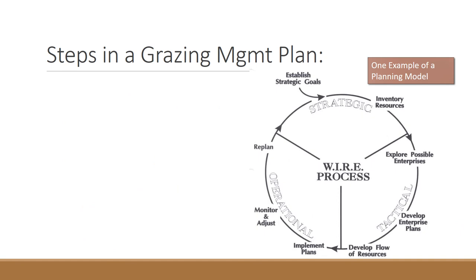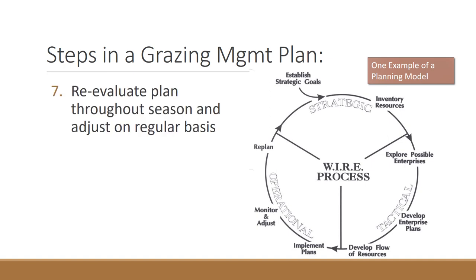Finally, once you've established goals, know your resources, explored possible enterprises, and developed the grazing plan — the tactical side — make sure you have the resources needed to implement that plan, then monitor and adjust: is the plan working? Replan if it's not. The last step in any grazing management plan is to reevaluate from season to season, every year, before, during, and after animals are out there, to make sure you're meeting the plan's goals. Bottom line: it's not a prescription, it's an adaptive management approach. Make a plan, go out and see if it's working.